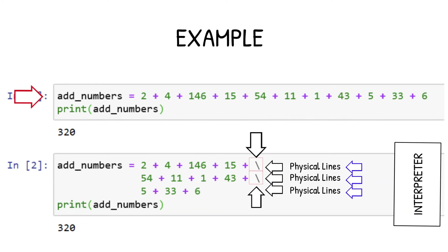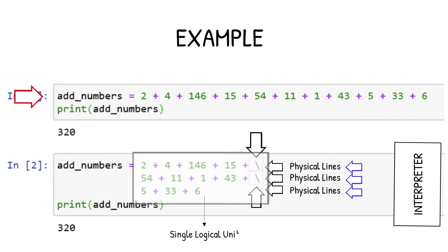In this way, the Python interpreter considers these three physical lines of code as a single logical unit and evaluates them as a single logical line. The result of the expression is calculated as a single logical unit and stored in the variable. This is how a multi-line statement works — you create multi-line statements by simply ending physical lines with backslash symbols.